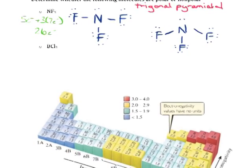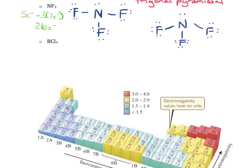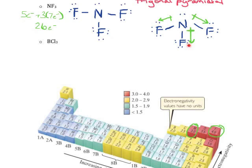To determine that, we're going to take a look at the electronegativity chart. Nitrogen has an electronegativity value of 3.0 and fluorine has a value of 4.0. That tells us fluorine is more electronegative, so fluorine is pulling more of the electrons in this bond. When we draw those dipole arrows, we're going to draw them pointed toward the fluorine. The cross at the end signifies the partial positive. Those three arrows are not going to cancel because there's no fourth arrow pointing upward. These two cancel, and I'm left with an arrow in the downward direction — an overall dipole — making this a polar molecule.